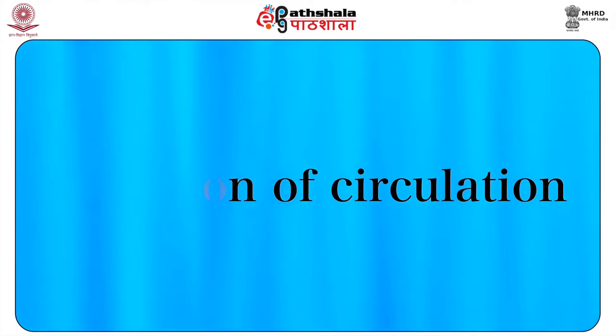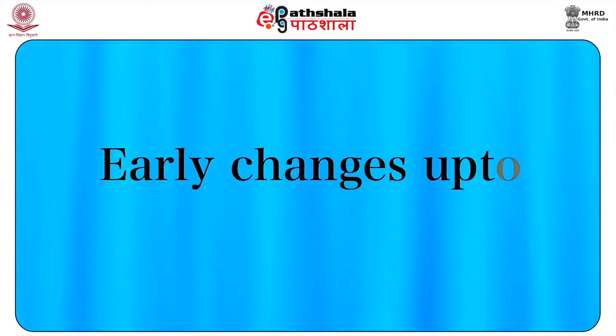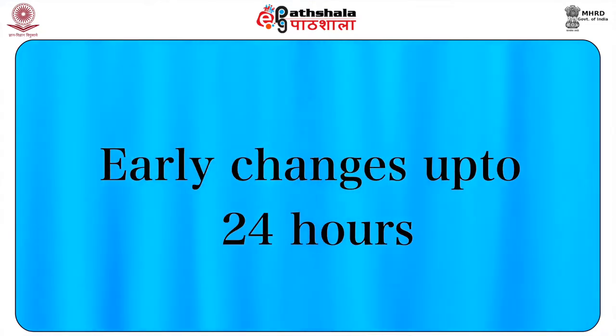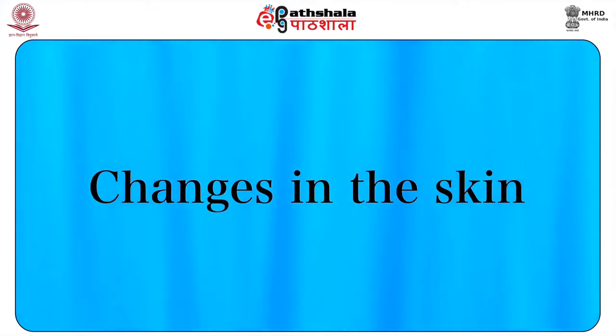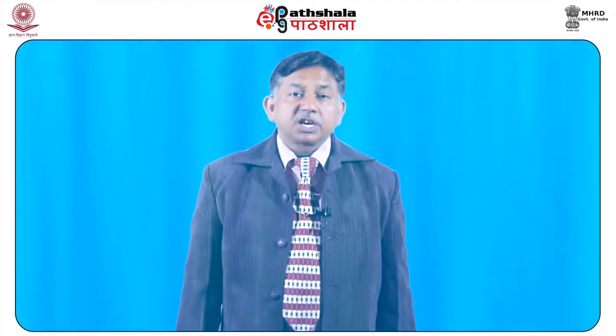The third immediate sign is cessation of circulation. Under normal conditions, stoppage of heartbeat for more than 5 minutes is irrecoverable and is accepted as evidence of death. Then there can be early changes up to 24 hours of death — changes in the skin. The skin becomes pale and white and loses elasticity. The lips will appear dark red to black, dry and hard due to drying.